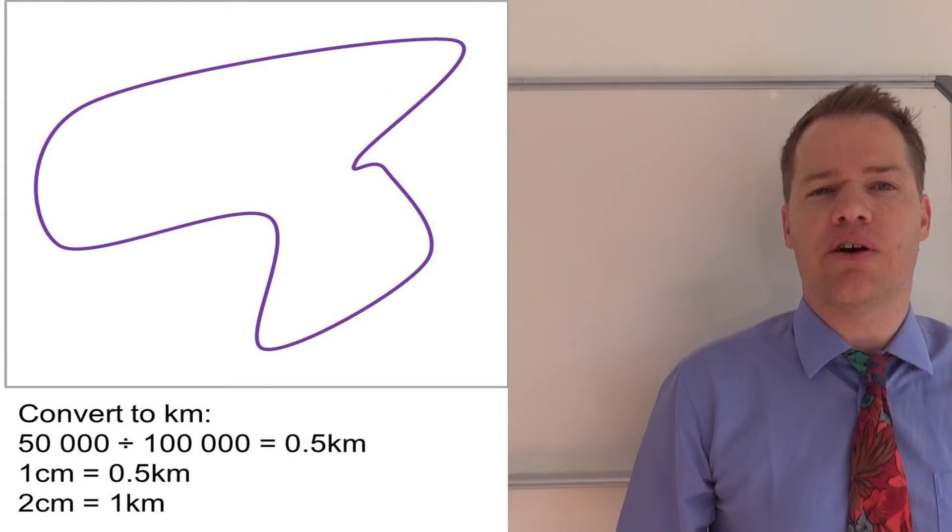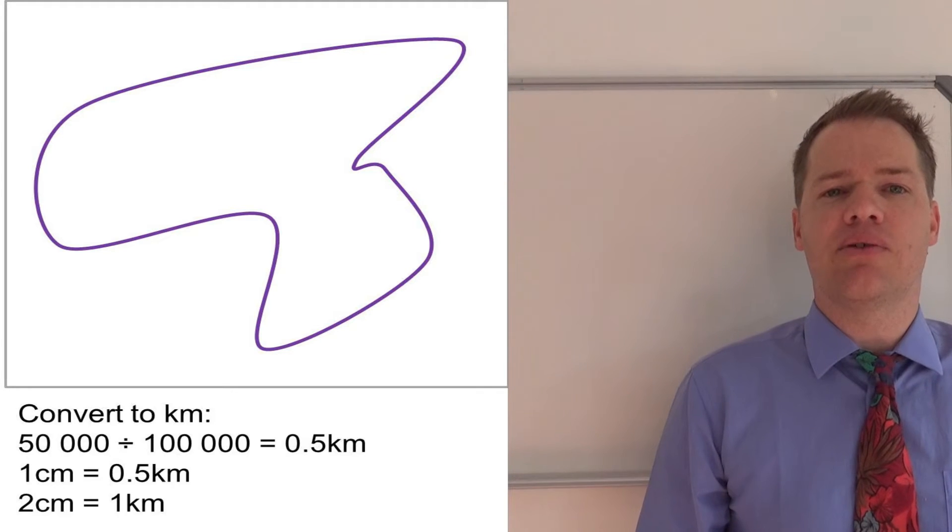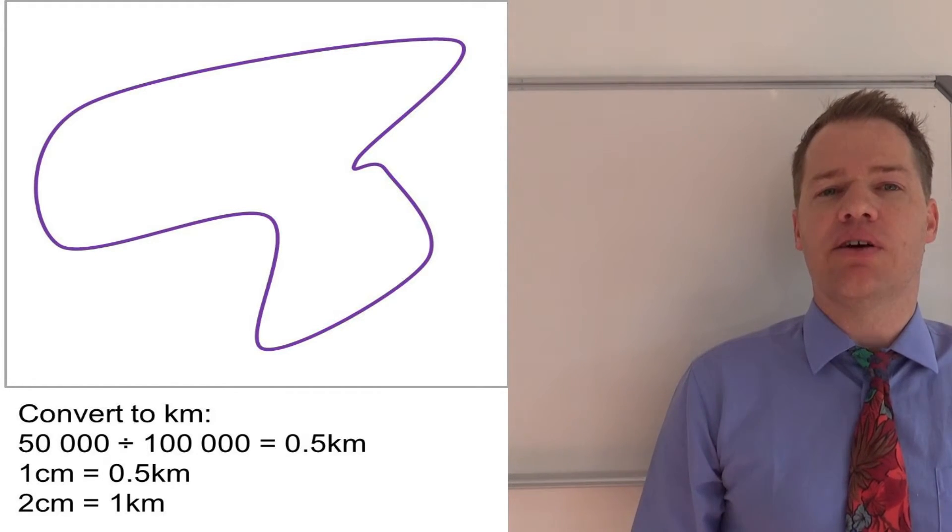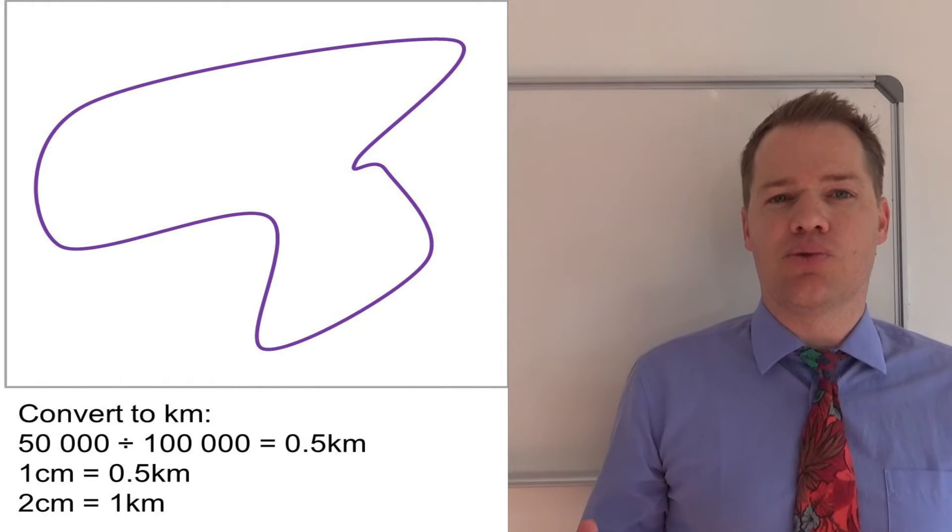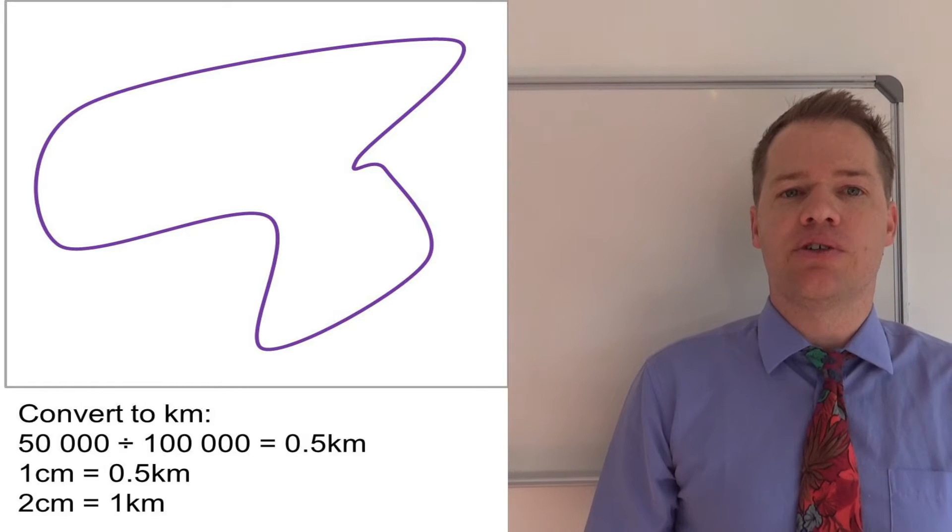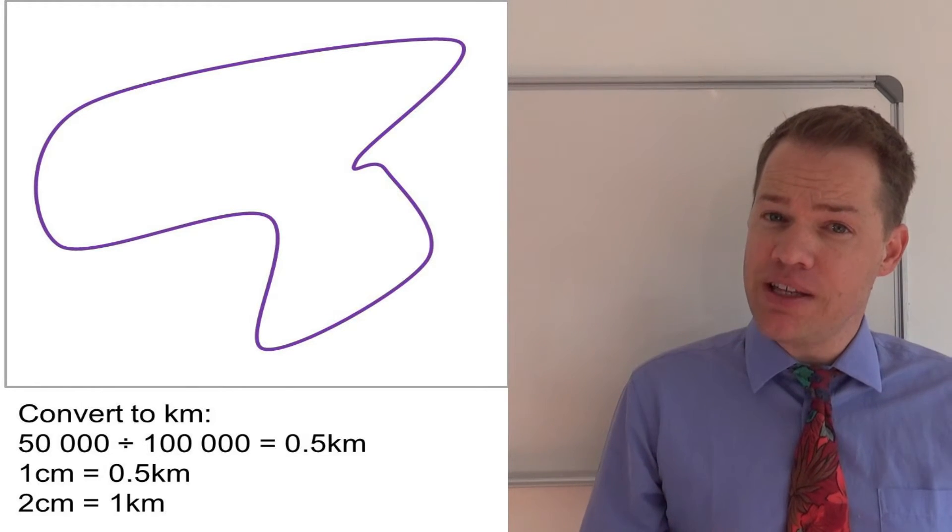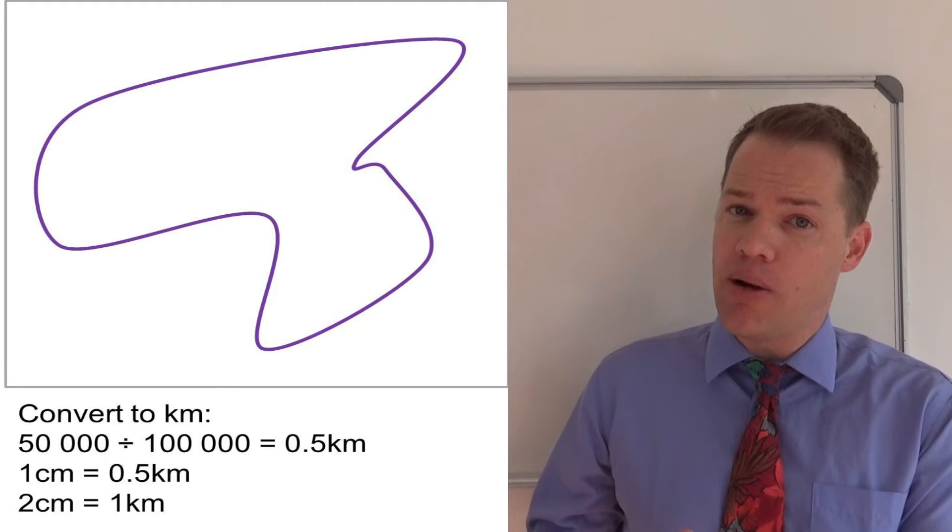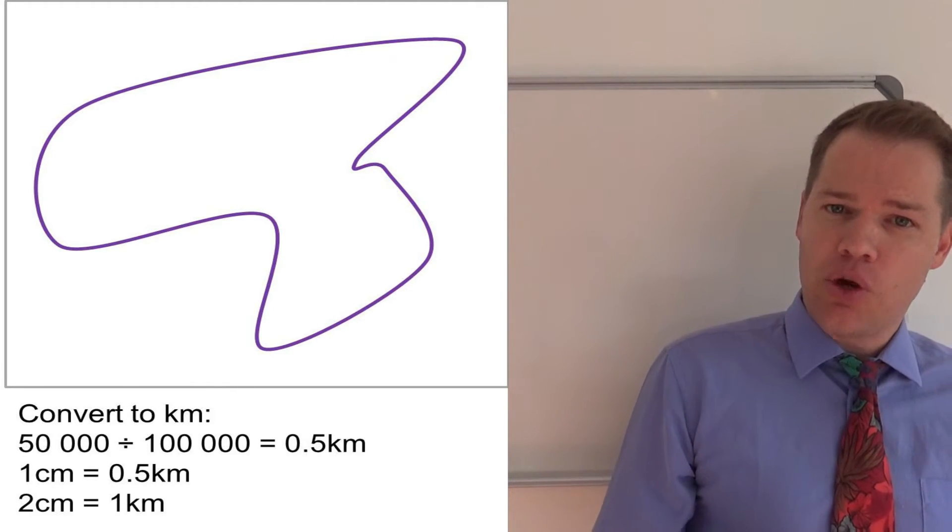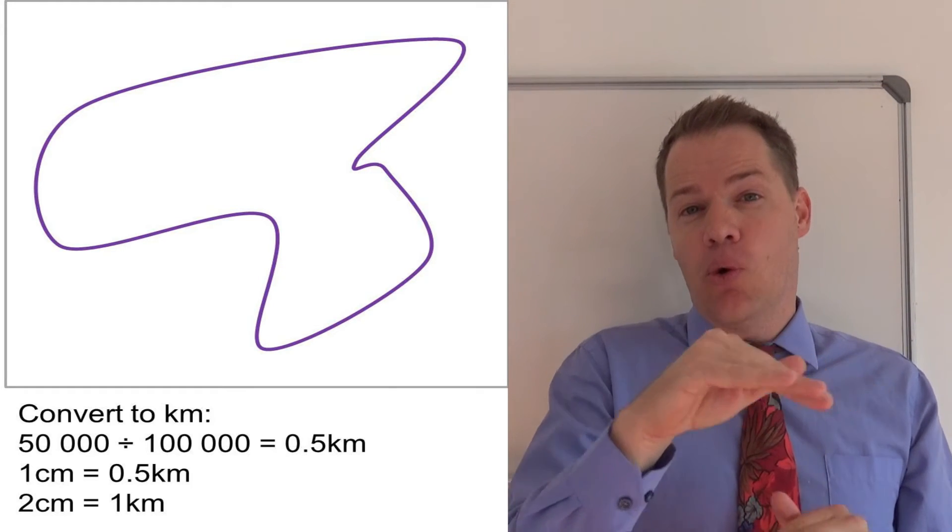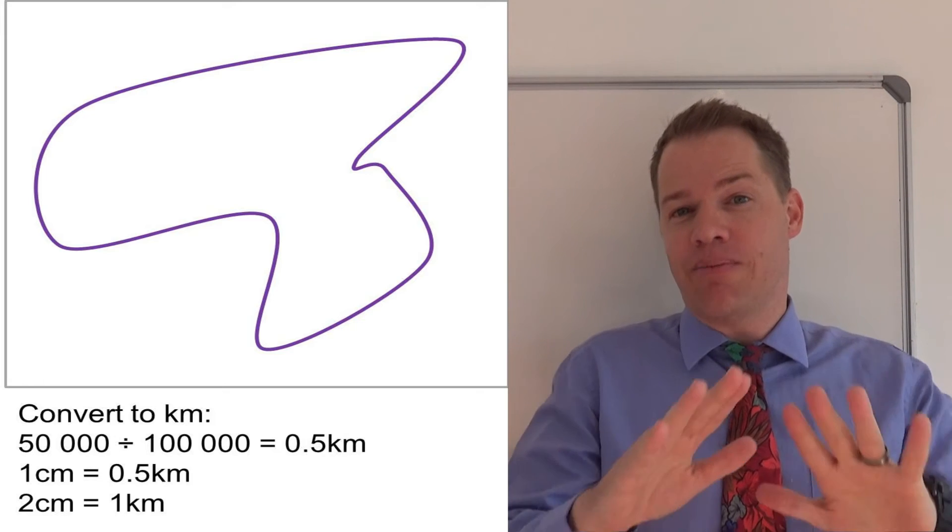So what we do is, in order to get from centimeters to kilometers, we divide by 100,000. So we are going to say 50,000 centimeters divided by 100,000 equals 0.5. And so we know that it's 500 meters or 0.5 kilometers. So if one centimeter on the map represents 0.5 kilometers, then two centimeters will represent one kilometer.